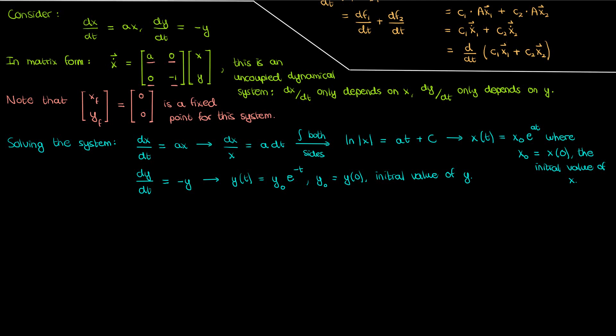Welcome back to another lesson on nonlinear dynamics, a lesson that's really a continuation of where we left off last time. Recall that last time we solved this two-dimensional dynamical system where we've got dx/dt dependent on just x and dy/dt dependent on just y. We called this dynamical system uncoupled because each differential equation only depended on its own variable — x and y weren't coupled, they were separated.